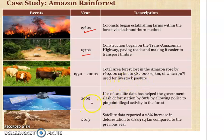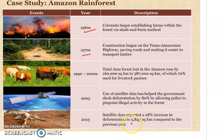In 2005, the use of satellite data helped the government slash deforestation by 80% by allowing police to pinpoint illegal activities in the forest. In 2013, satellite data reported a 28% increase in deforestation to 5,843 square kilometers compared to previous years.